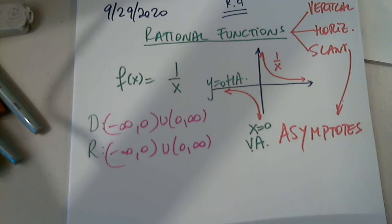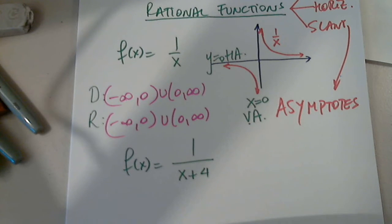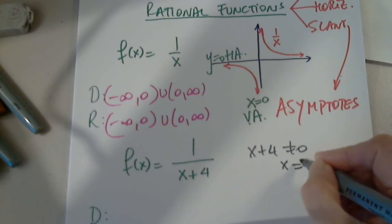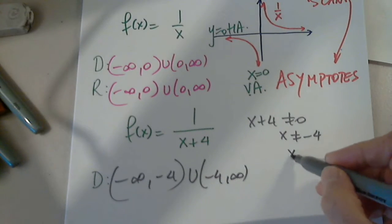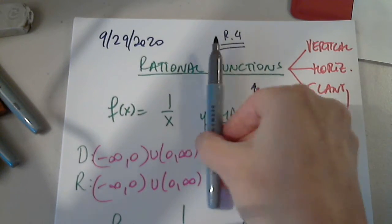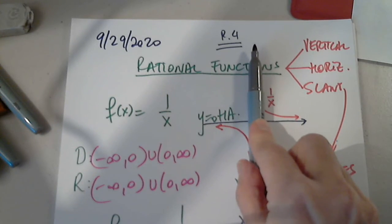We can use transformations. For example, 1 over x plus 4. Can anyone give us the domain of this function? What value of x can we not plug in? Negative 4. x plus 4 cannot equal 0, which means x cannot equal negative 4. So the domain is negative infinity to negative 4, union negative 4 to infinity. So x equals negative 4 is the vertical asymptote, because this graph has to be shifted four units to the left.